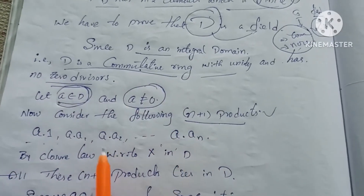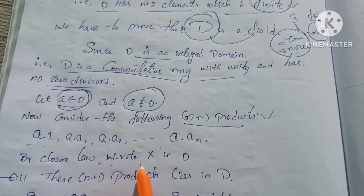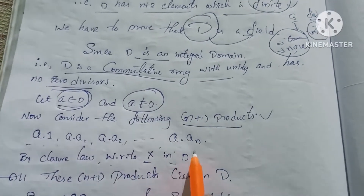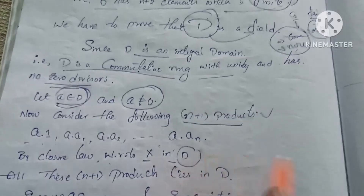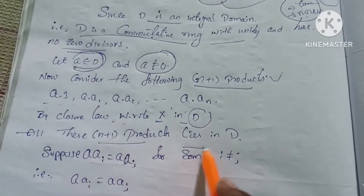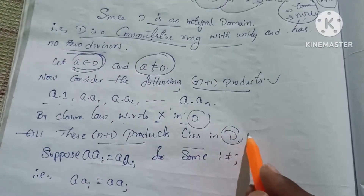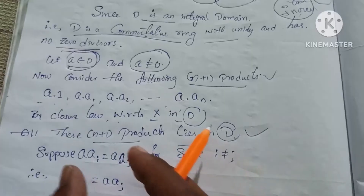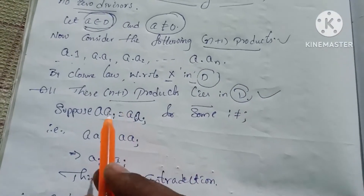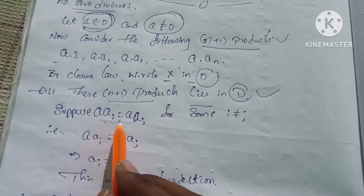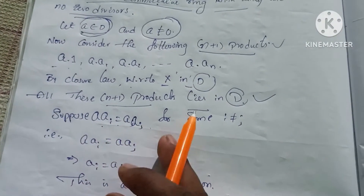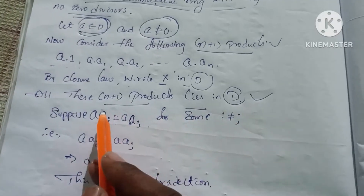By the closure law with respect to multiplication in D, since D is an integral domain, all these n+1 products lie in D. Suppose two elements are equal: a·ai = a·aj for some i not equal to j.